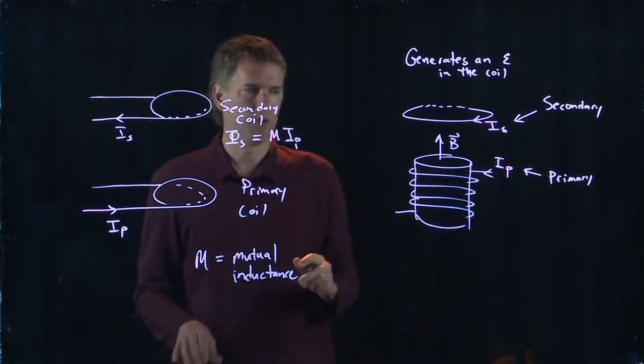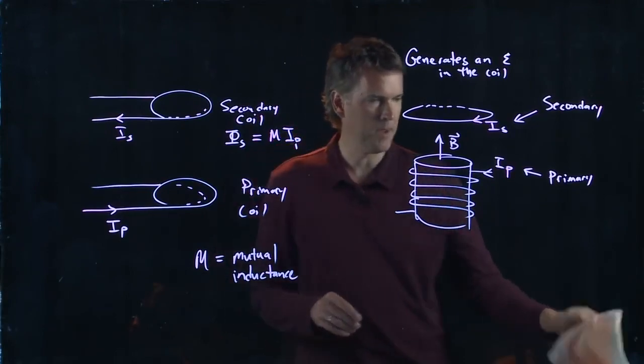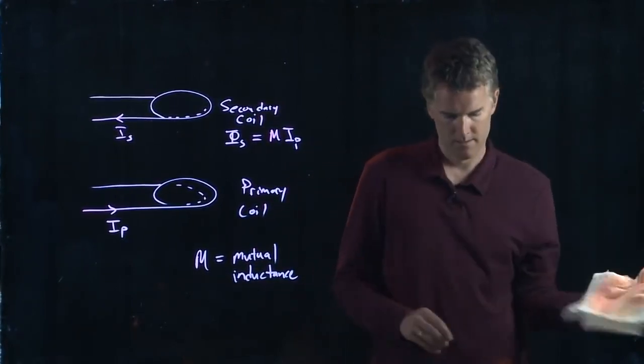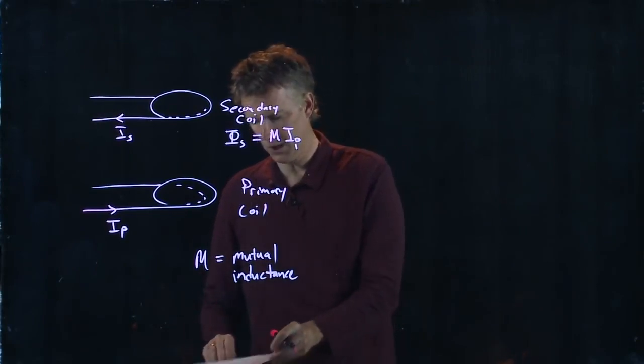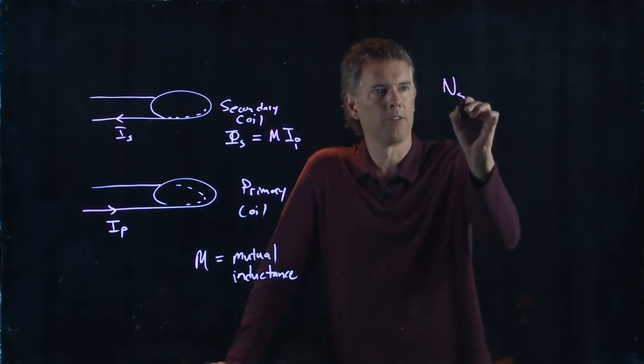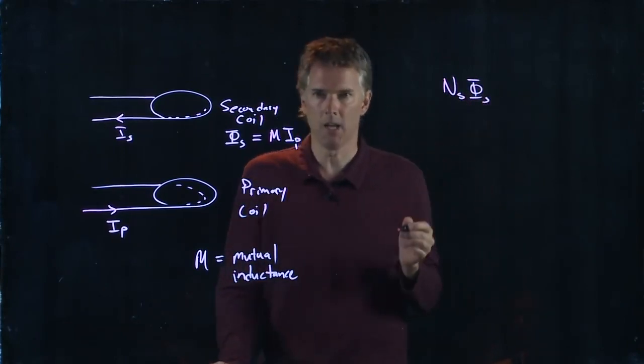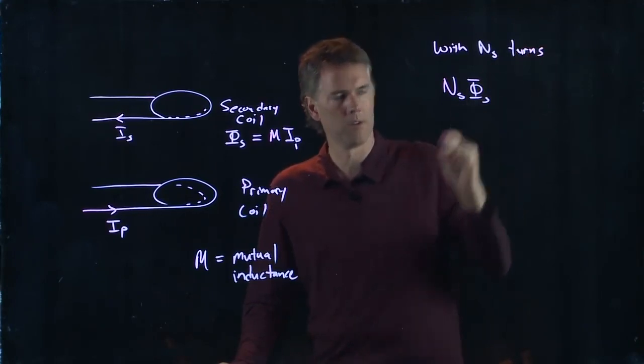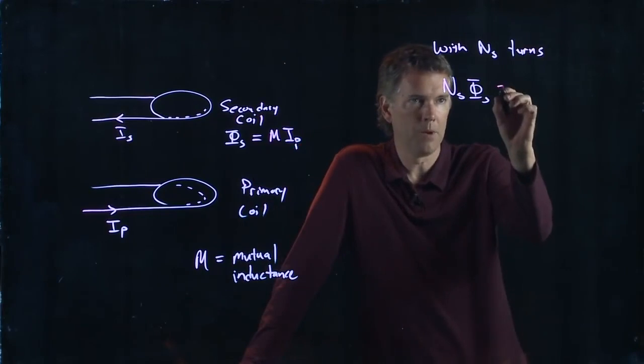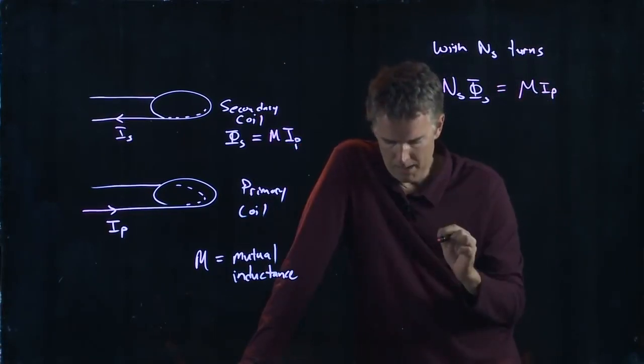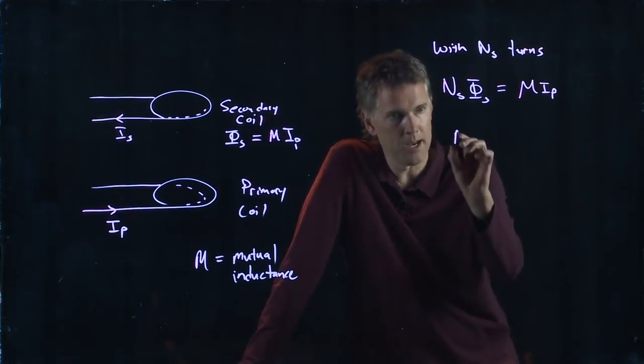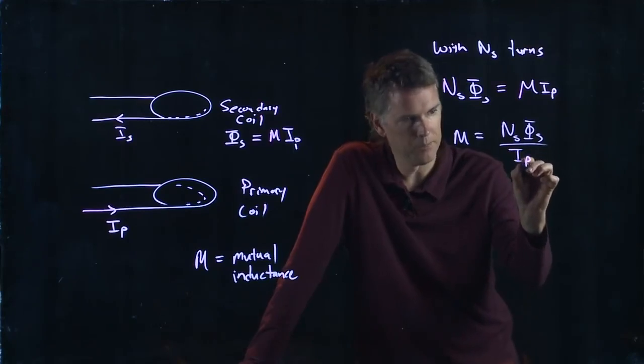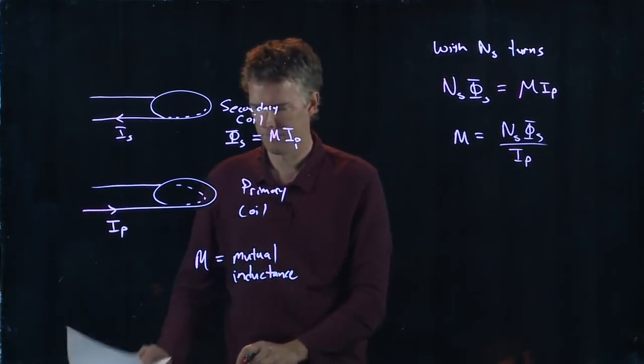And now we're going to go back to this case where we add many turns to it. So in my secondary if I put many turns then the amount of flux just increases like N. So with N_S turns then the flux goes like N but that is still just equal to M times I_P. And so you can write down what M is. M is equal to N_S phi_S divided by I_P.